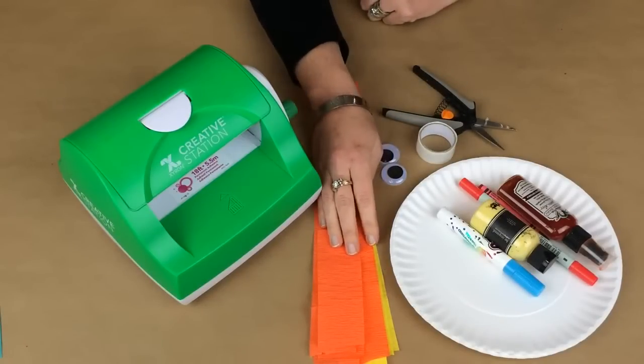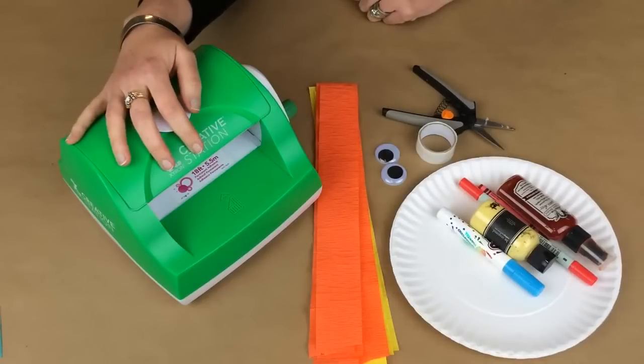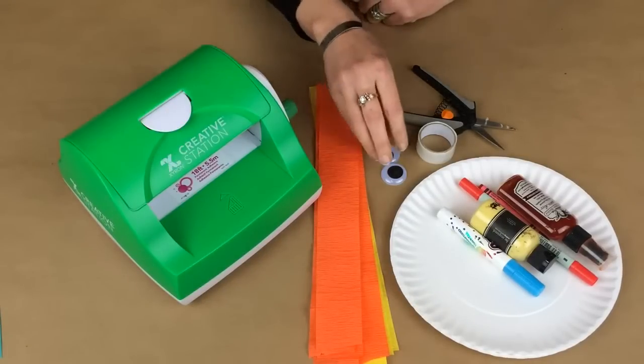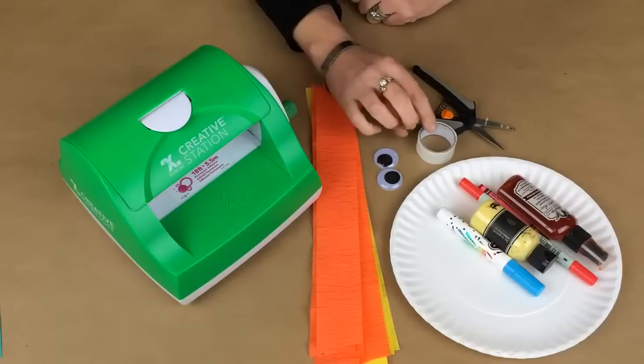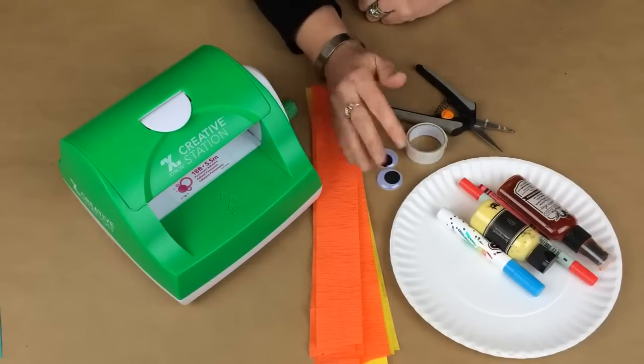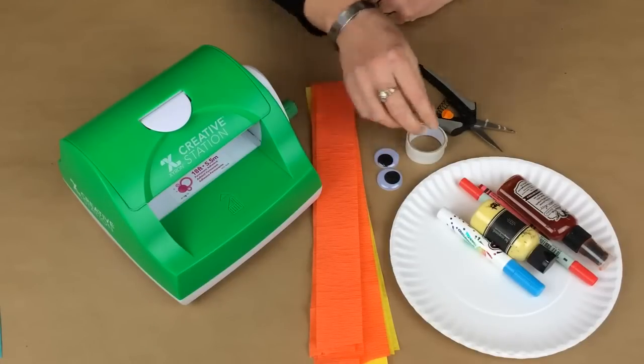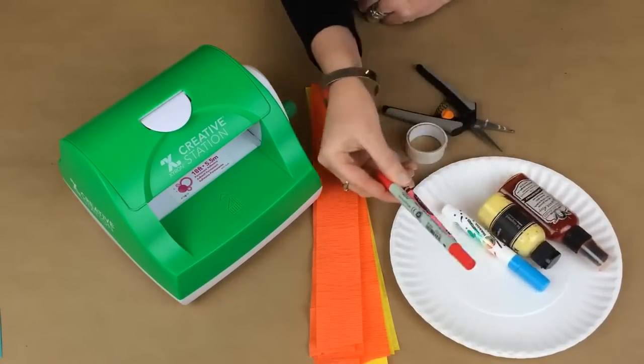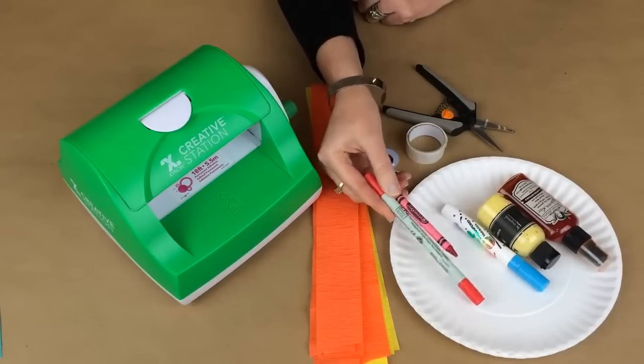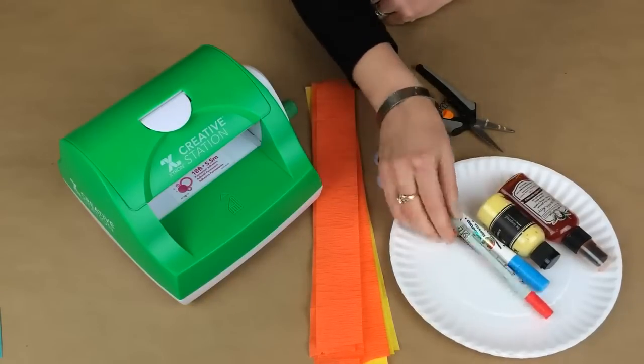You'll also need your Xyron 5 inch creative station with the permanent adhesive inside, a set of googly eyes, and then either glue dots or liquid glue to adhere those, and you're going to want to have a red pencil crayon or marker to draw the mouth on our jellyfish.